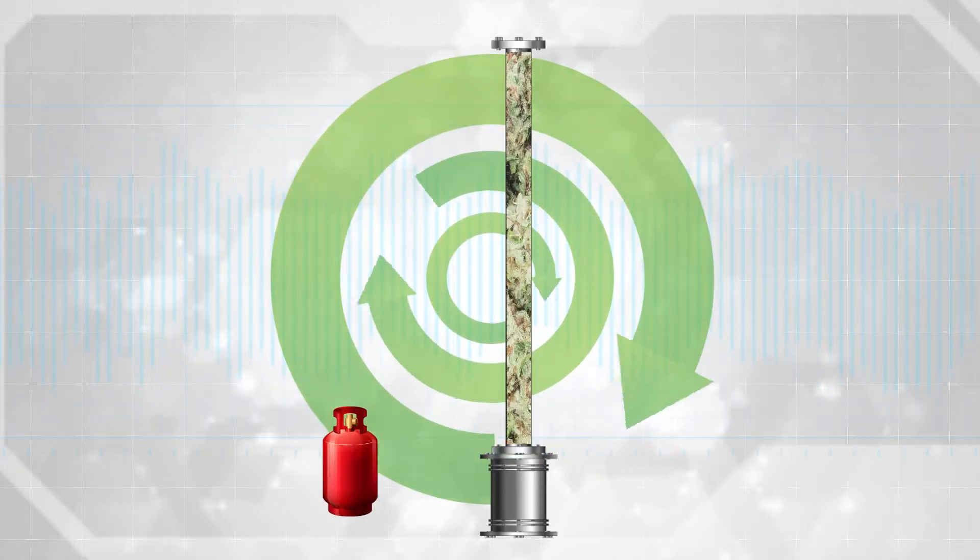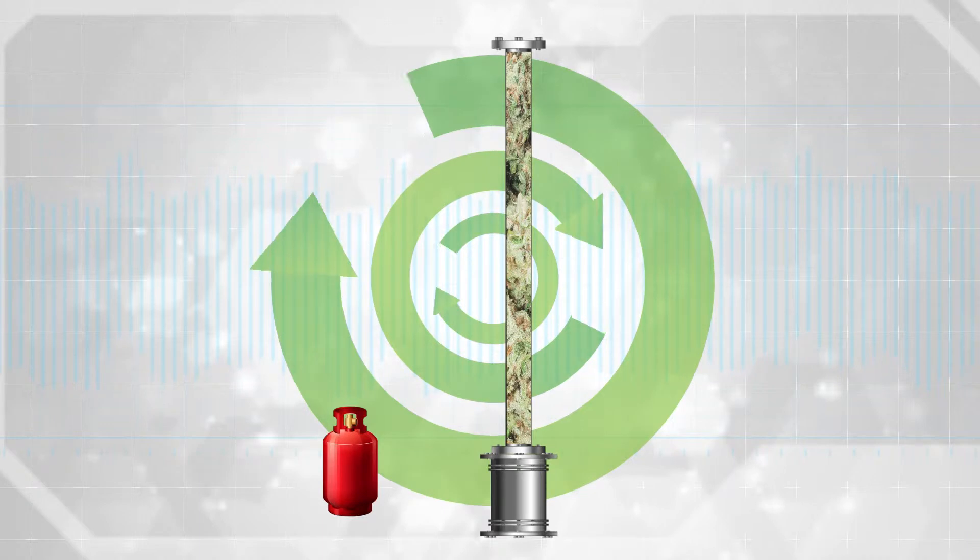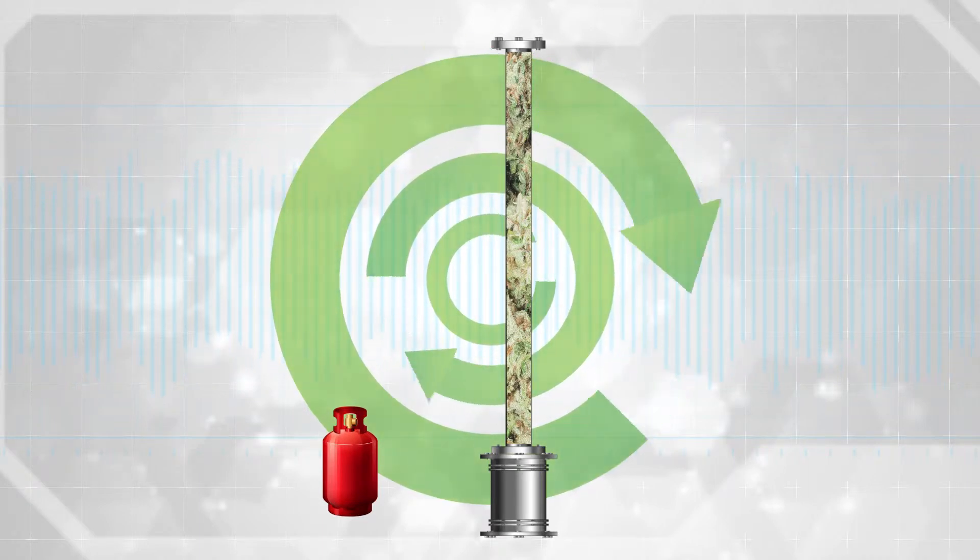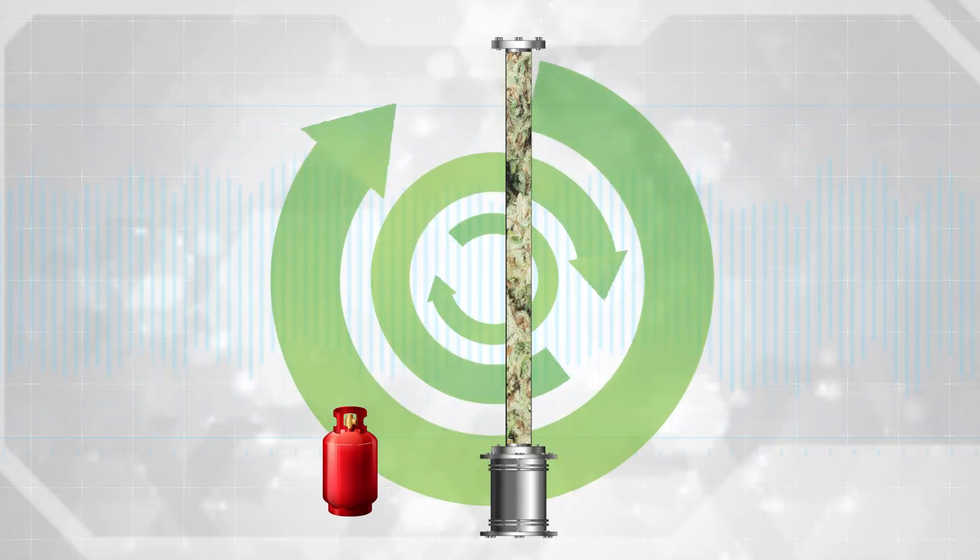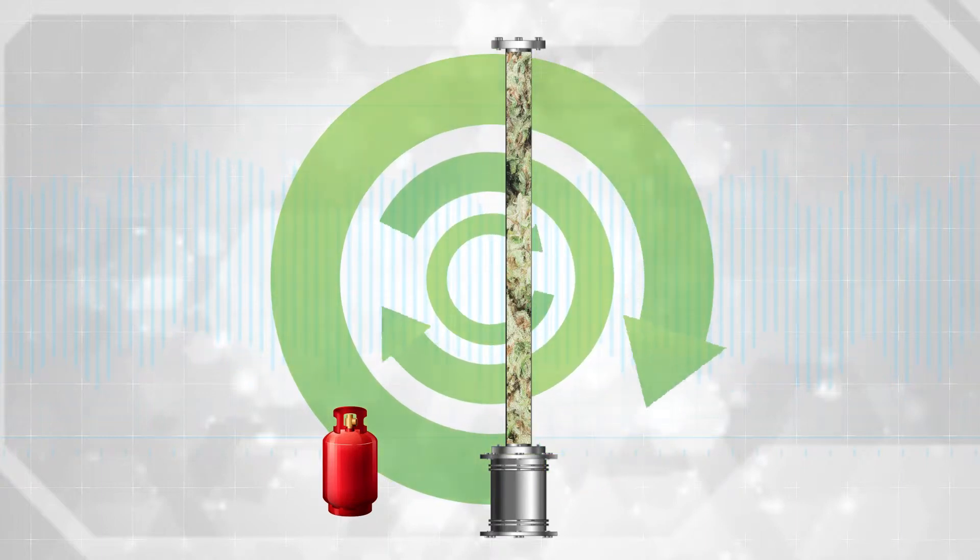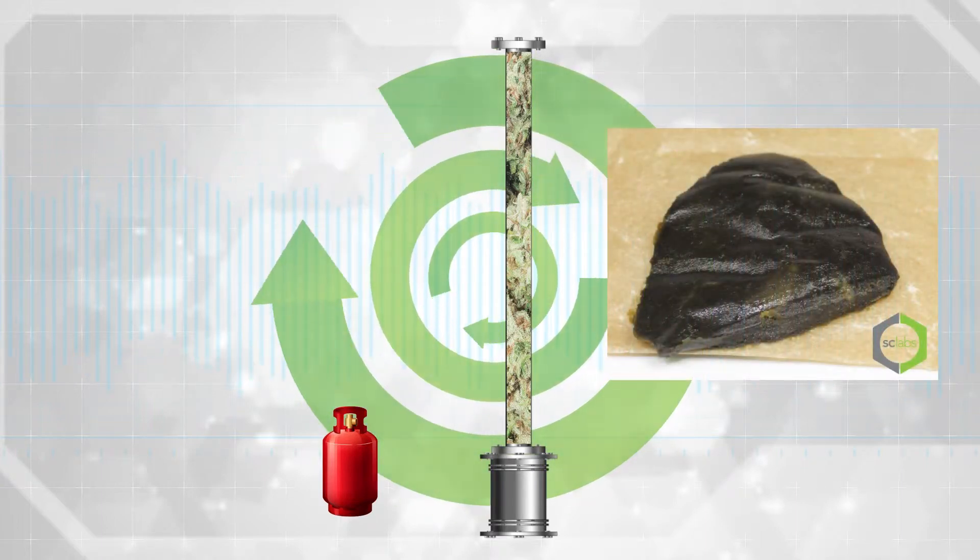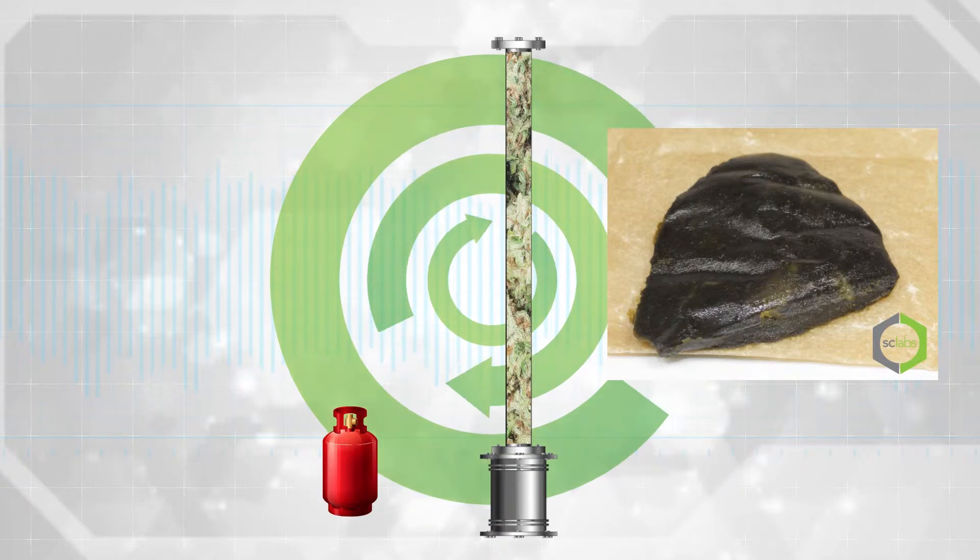If an inadequate amount of solvent is used, it may be required to recover the solvent and loop it back through the plant material. This will add extreme contact time between your solvent and plant matter. Adding contact time extracts high levels of wax, tar, dark compounds, and other heavy lipids found in plants.